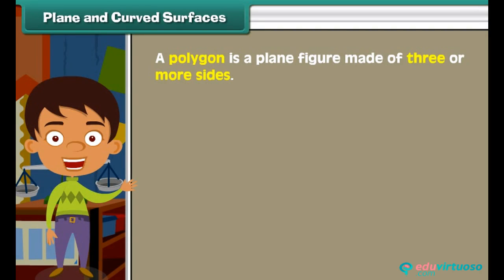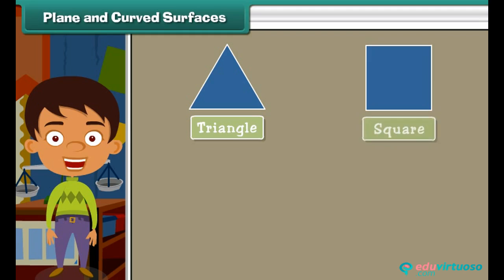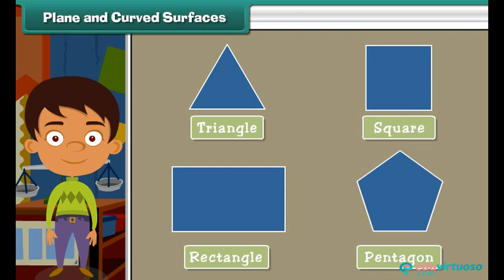A polygon is a plane figure made of three or more sides. Various types of polygons are triangle, square, rectangle, and pentagon. Now we'll study about plane figures, sides, and vertices.